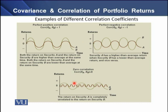In the bottom panel we have a zero correlation, as the returns on asset B are increasing and decreasing many times while asset A follows a different pattern. Apparently there is no relationship between the returns of asset A and asset B, so this is the example of zero correlation.